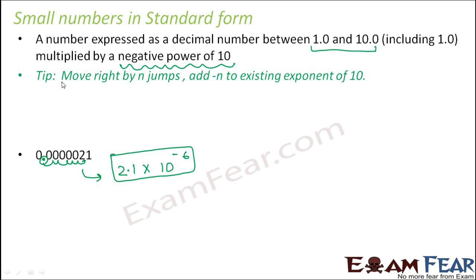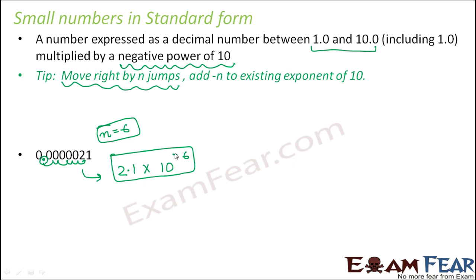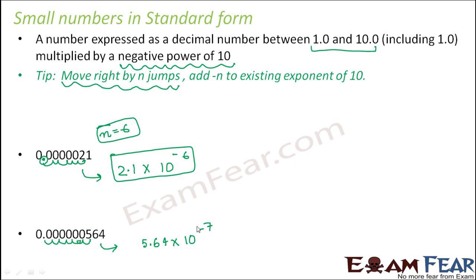So 0.000021 in standard form is 2.1 × 10⁻⁶. The simple tip is: move right by n jumps, and the exponent of 10 is −n. Here n was 6. Let's take one more example: 0.0000005.64. The decimal point is here. We want to place it at 5.64, since that lies between 1 and 10 (56.4 does not). The number of jumps taken is 1, 2, 3, 4, 5, 6, 7 — so this is 5.64 × 10⁻⁷.